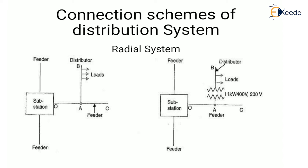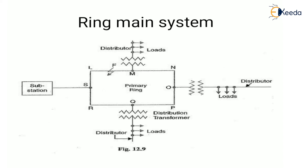The radial system has a disadvantage: if any fault occurs on the feeder or distributor, it cuts off the supply to the consumer, so this system is used for short distances only. Next is the ring main system — a loop circuit starts from the substation bus bar, makes a loop through the areas to be served, and returns to the substation. Distributors are tapped from different points such as M, O, and Q.